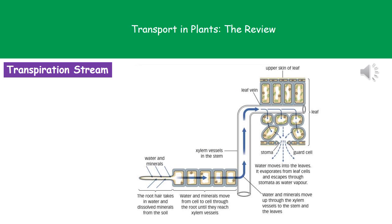What we've got here is a diagram representing the transpiration stream. If we start in the bottom left corner, we can see our root hair cell, which we can identify by that big bit that sticks out — its whole purpose is to increase the surface area. Our water and minerals from the soil go into our root hair cell, and then they're passed through cell to cell until they reach the xylem vessels. Once they're in those xylem vessels, they're carried up the stem into the leaves, and then the water is going to cross through those cells, through our stomata, and out into the environment as it evaporates.